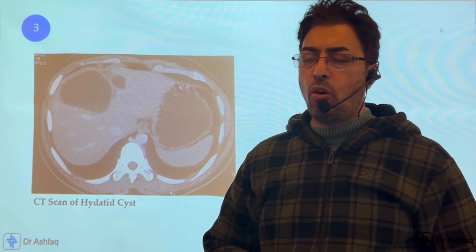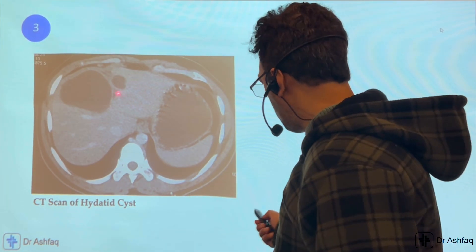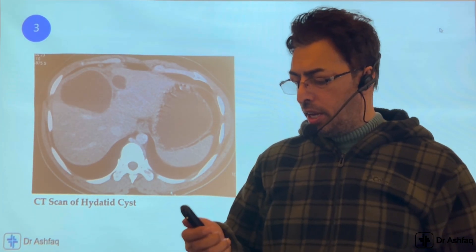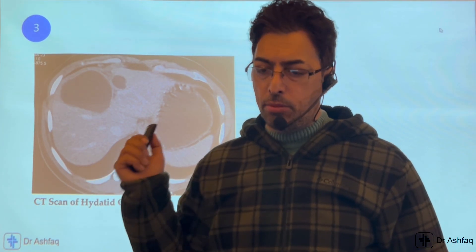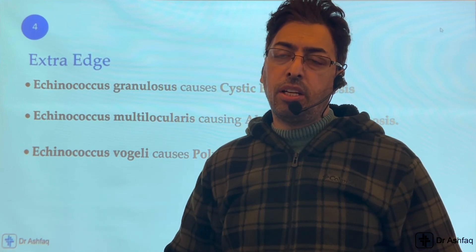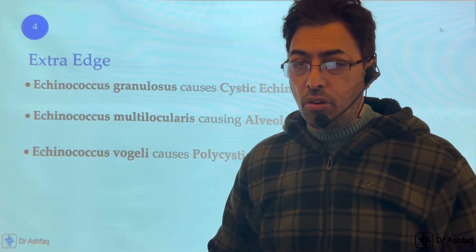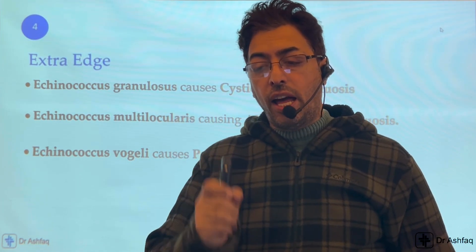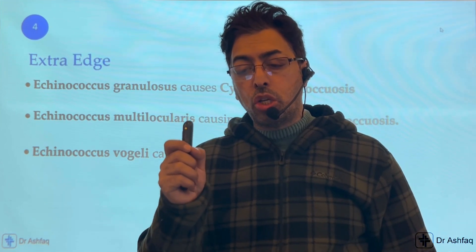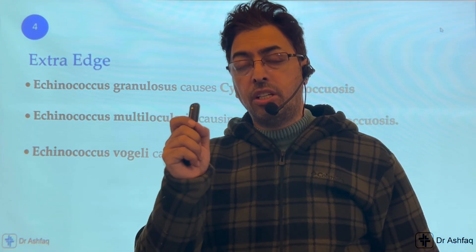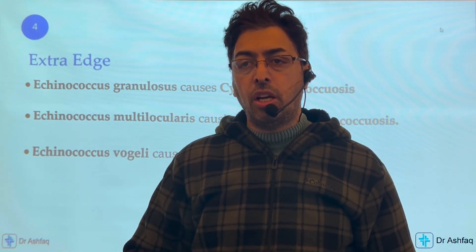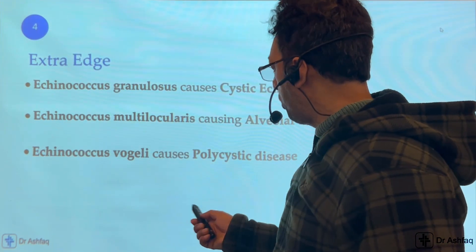This CT scan image shows a hydatid cyst in the liver — one bigger and one smaller cyst in the right lobe. An important distinction: Echinococcus granulosus causes hydatid cysts of the liver mainly, while Echinococcus multilocularis causes alveolar echinococcosis — hydatid disease of the lungs mostly. Echinococcus vogeli causes polycystic disease with multiple disseminated cysts throughout the body.